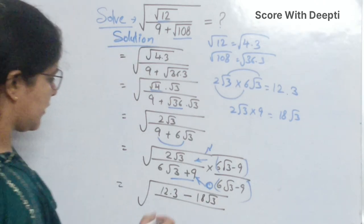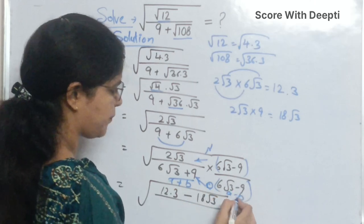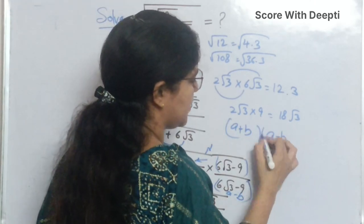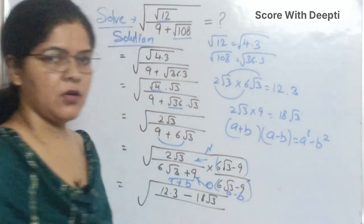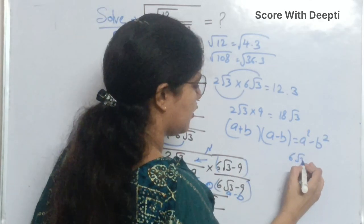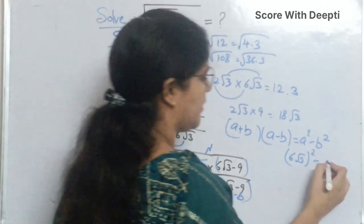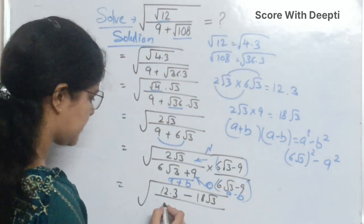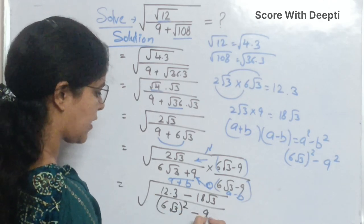In the denominator we have a plus b into a minus b, which equals a squared minus b squared. Here a is 6 square root 3 and b is 9, so we write 6 square root 3 whole square minus 9 square.